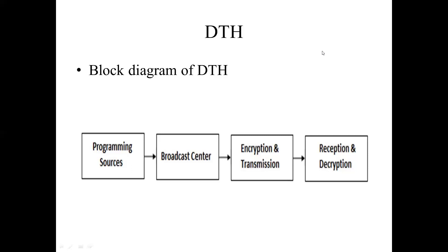The DTH receiver at the customer end includes an encoder, multiplexer, and modulator. The encoder converts audio, video, and data signals into digital format, and the multiplexer mixes these signals together.